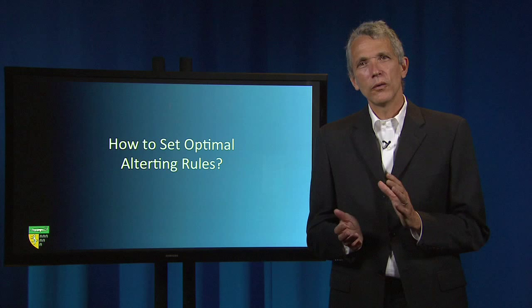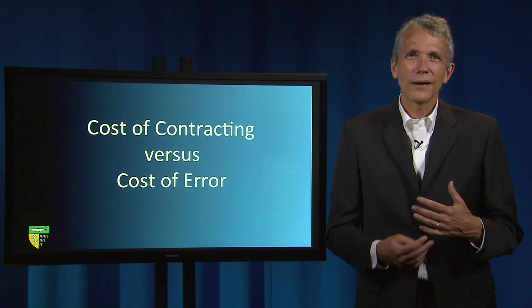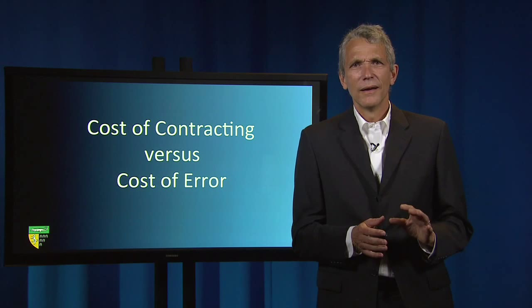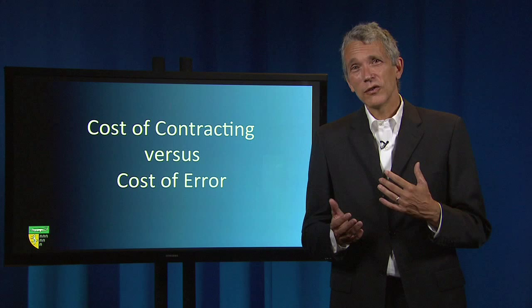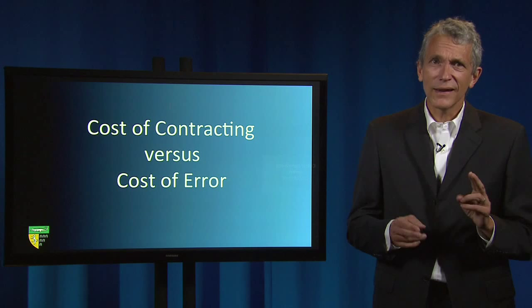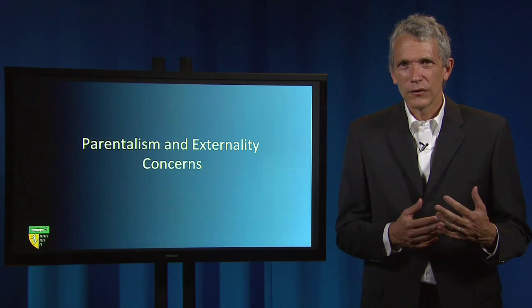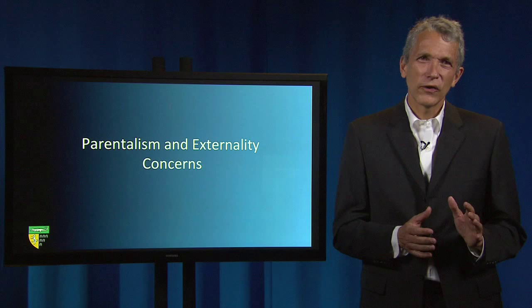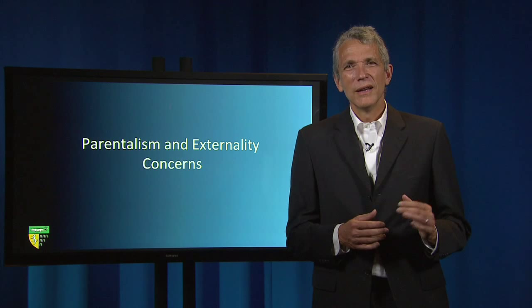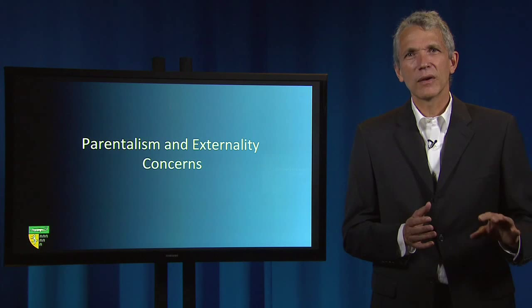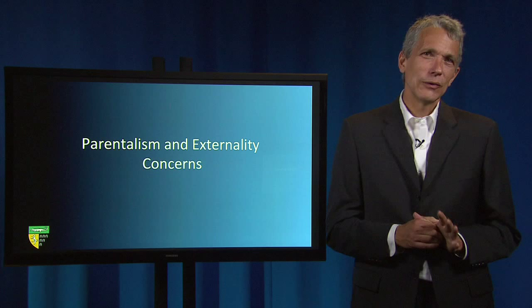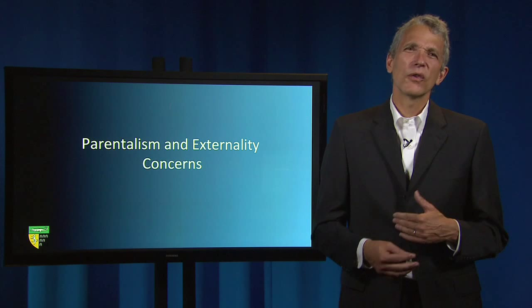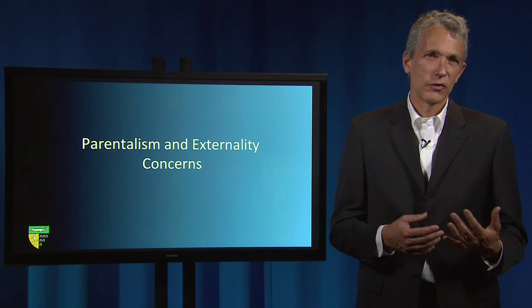There are two broad reasons for structuring altering rules that deviate from merely minimizing transaction costs. First, at times it will be more important to minimize the cost of party error, especially non-drafter error, and third-party error, especially judicial error, than it is to minimize the cost of altering. Second, when externality concerns or paternalistic concerns to protect the contractors themselves are insufficient to justify full-blown mandatory rules, lawmakers might at times impose impeding altering rules, which intentionally deter subsets of contractors from contracting for legally disfavored provisions. Impeding altering rules produce an intermediate category of quasi-mandatory or sticky defaults, which manage but do not eliminate externalities and paternalism concerns.